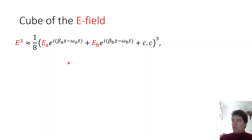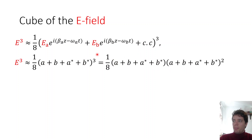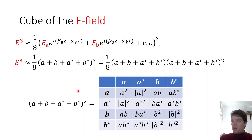To compute the cube of the E field, we take the cube of a bracket containing the part oscillating at omega A, the part oscillating at omega B, and their respective complex conjugates. To simplify the algebra, I express the omega A term as A and the omega B term as B, including their complex conjugates. The easiest approach is to first compute the square of this four-term parenthesis using a table where every single cross term is multiplied together.